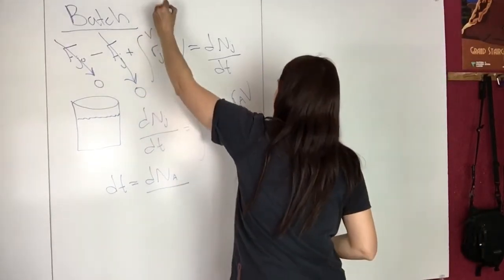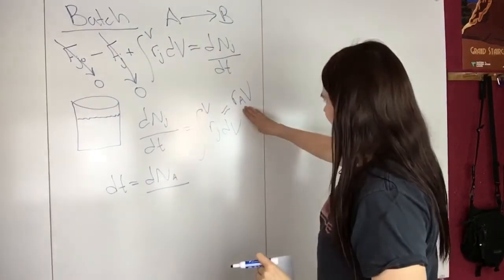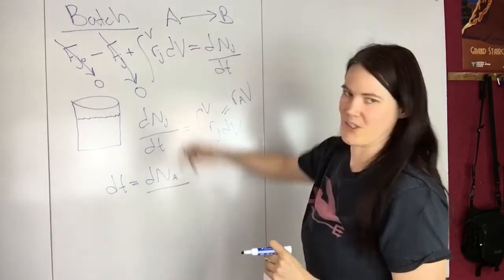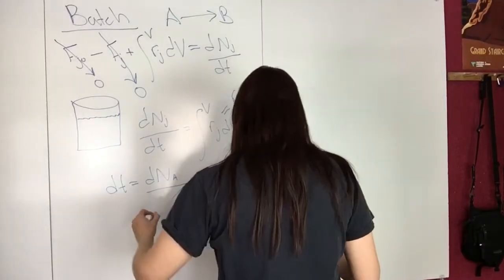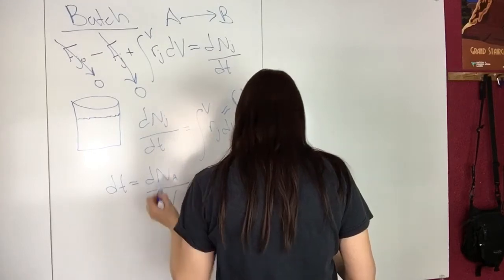so assuming that you have a reaction that looks like this, let's just assume that we're looking at A. So dt equals dNA over RA times V,